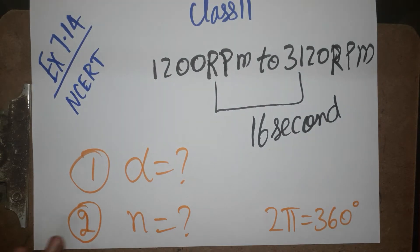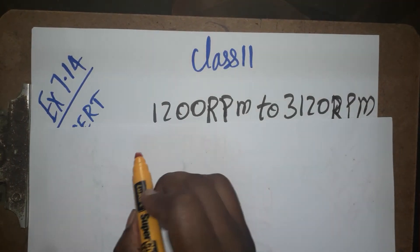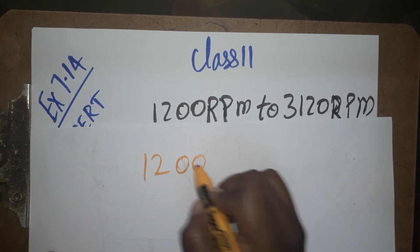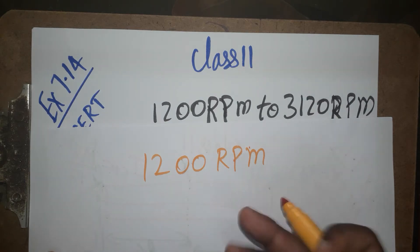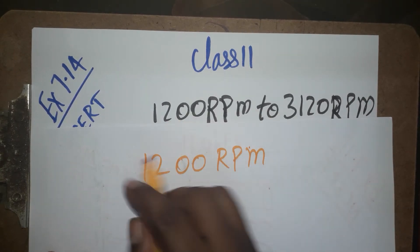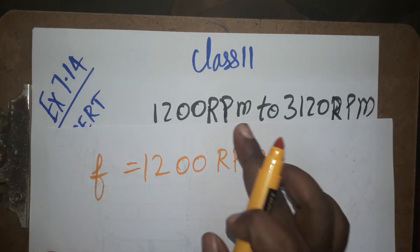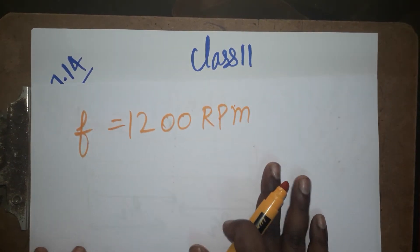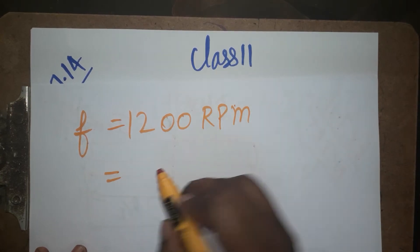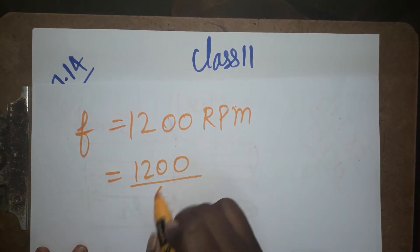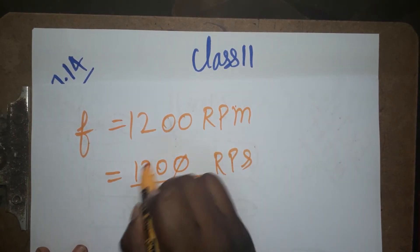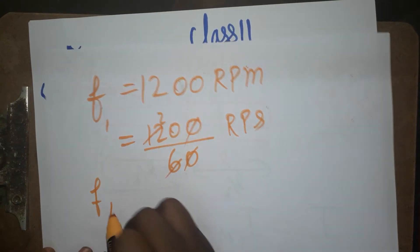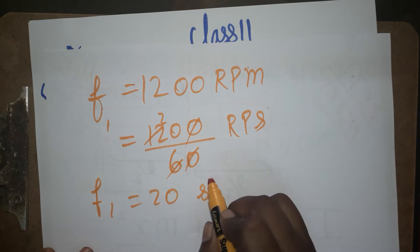First, what is given: 1200 RPM. The unit is per minute, so they are given as a frequency. We have to be careful — RPM is frequency, not angular velocity. I am going to convert it to RPS: 1200 divided by 60, since one minute is 60 seconds. The zeros cancel, giving us 20 RPS, so the initial frequency f1 is 20 per second.